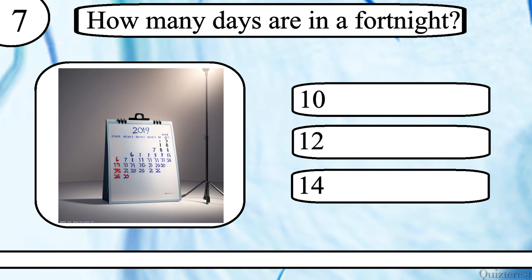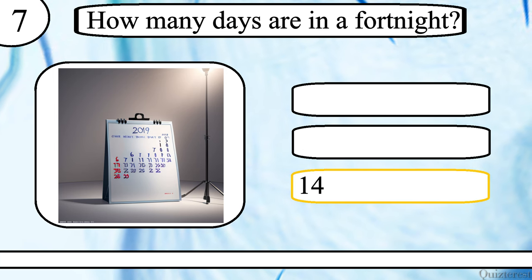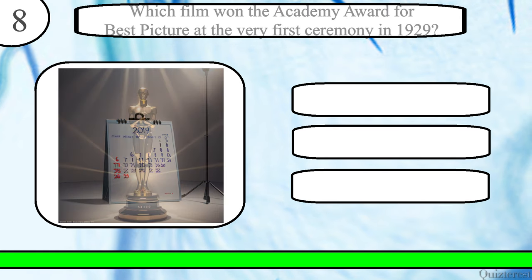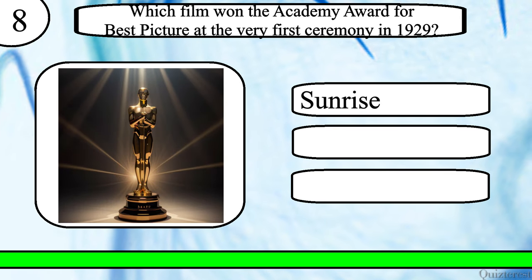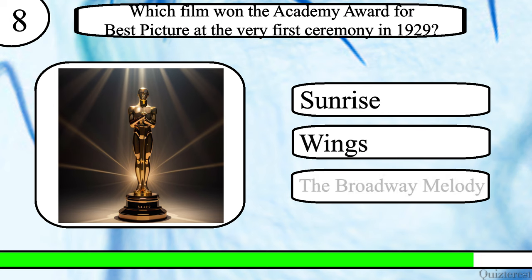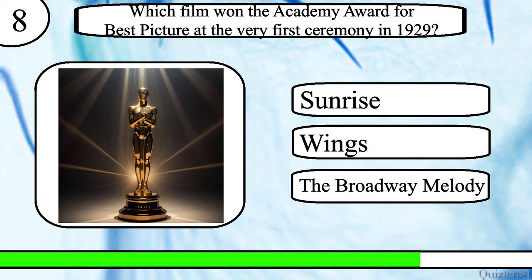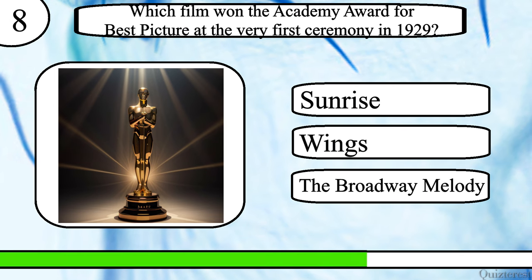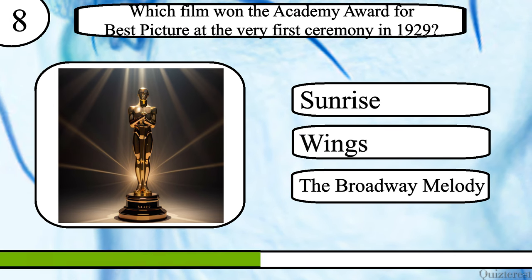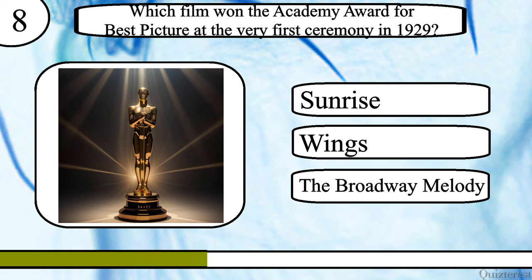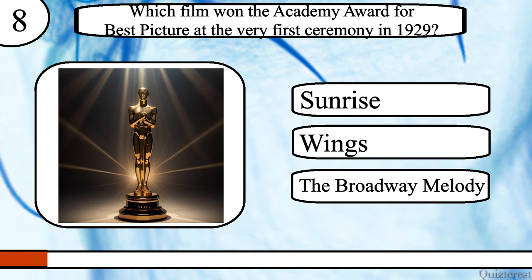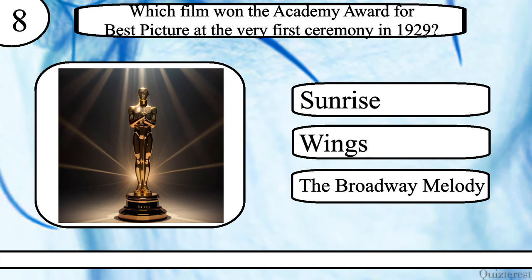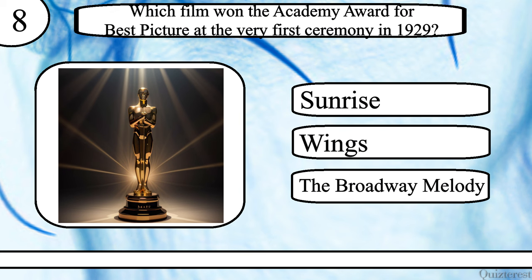Question 8. Which film won the Academy Award for Best Picture at the very first ceremony in 1929? Sunrise, Wings, or The Broadway Melody? The correct answer is Wings.